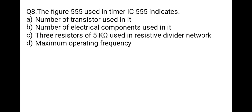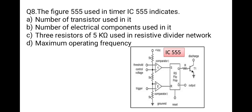The next question: what does the figure 555 in timer IC 555 indicate? Options: number of transistors used, number of electrical components, three resistors of 5 kΩ in a resistive divider network, or maximum operating frequency. From the block diagram, there are three resistors of 5 kΩ connected in series forming a resistive divider network. Correct option is C.